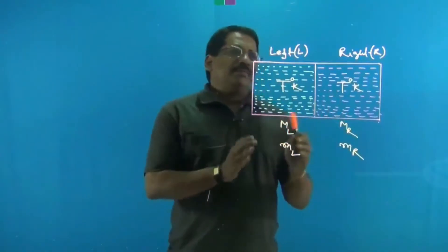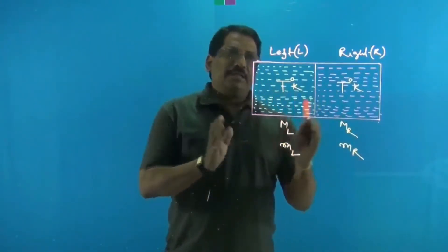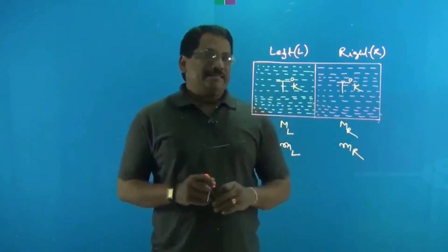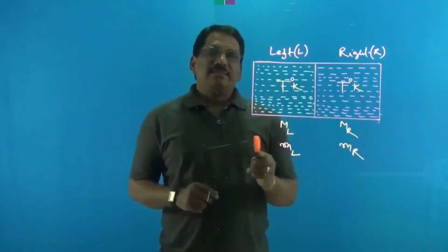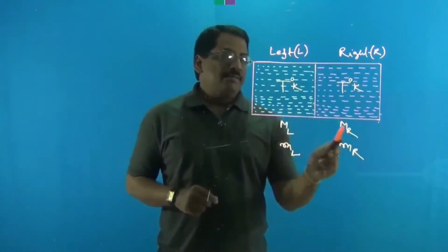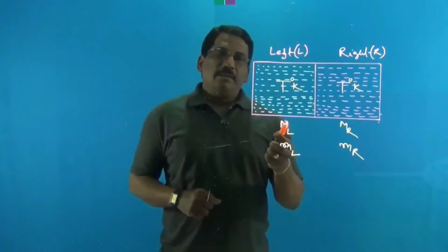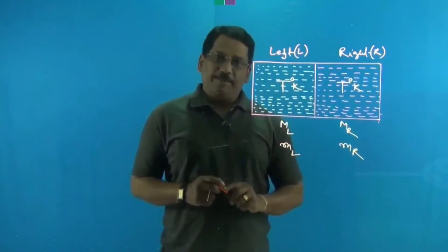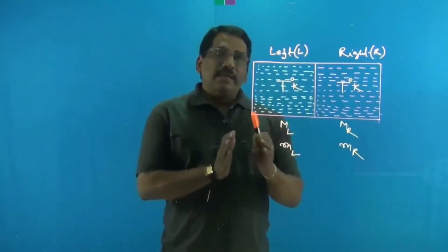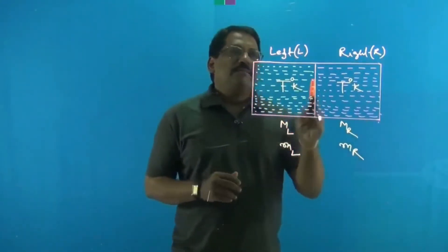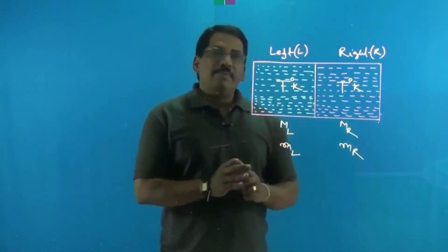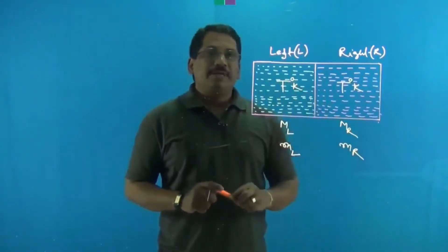We have a vessel divided into two equal halves — a left half and a right half — filled with different ideal gases. The molecular weights of the gases are different: M_L on the left and M_R on the right, with corresponding molecular masses m_L and m_R. The separator between them is a diathermic separator, so the temperatures of both parts are the same.